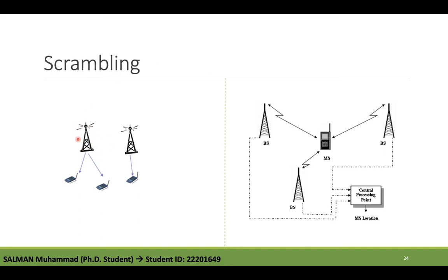To understand scrambling: assume you are a base station receiving signals from various UEs simultaneously — how do you differentiate incoming signals at the physical layer? Similarly, if you are a UE hearing from various base stations simultaneously, how do you differentiate them at a very low hardware level? The answer is scrambling codes. By using scrambling codes, the base station can separate signals coming from various UEs, and the UE can separate signals coming from many base stations.